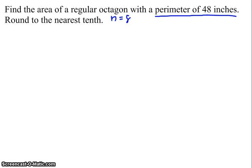So let's think about this. A regular octagon, we get to use our formula of one-half perimeter times apothem. So all we have to do is figure out what our perimeter is and what our apothem is, and we're set.